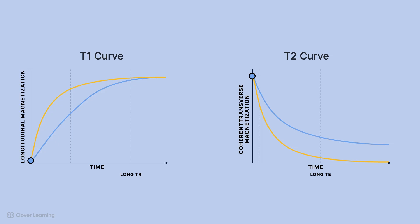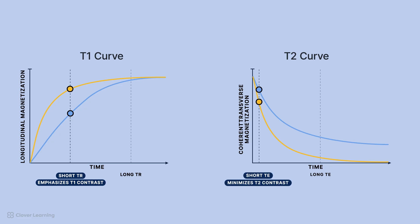In order to achieve a T1-weighted image, we will need to adjust the repetition time, TR. TR controls the amount of T1 contrast in an image. A short TR prevents both fat and water from fully recovering their longitudinal magnetization, emphasizing T1 contrast. A short TE minimizes T2 contrast.